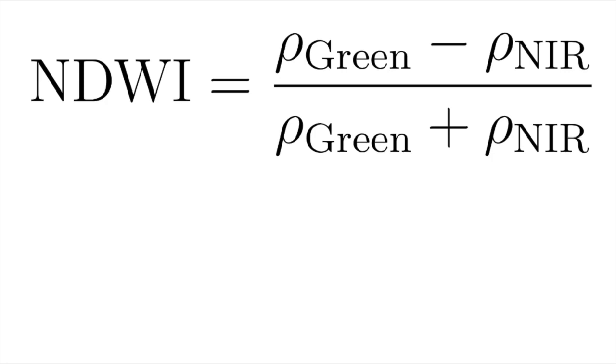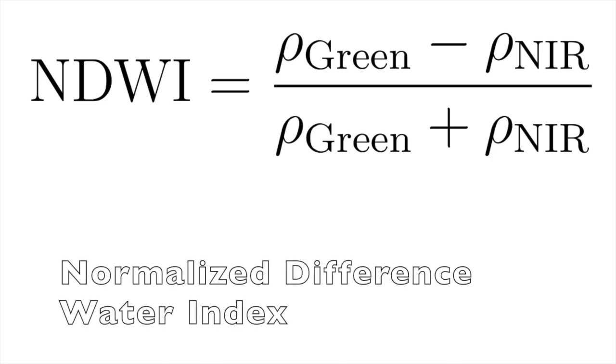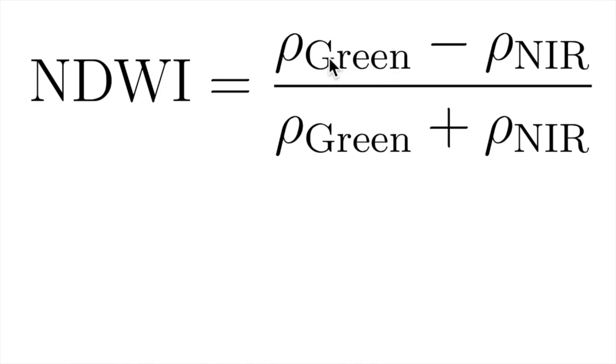First of all, I would like to recall the NDWI formula. This equation requires arithmetic between the green and near-infrared bands divided by green plus near-infrared bands.